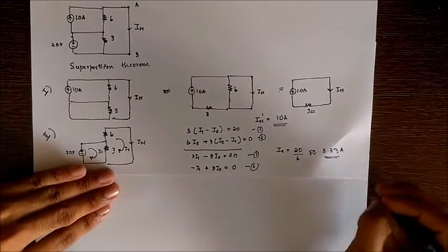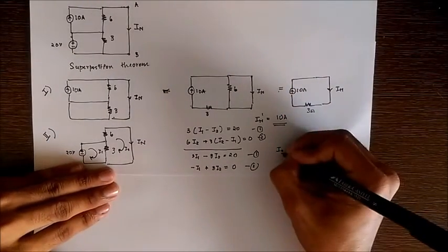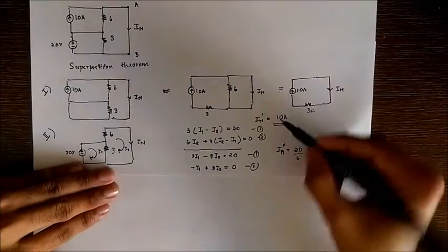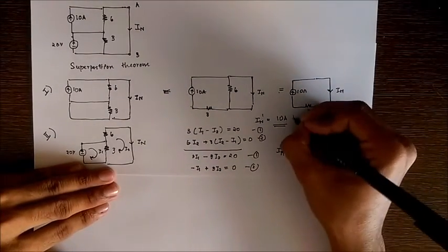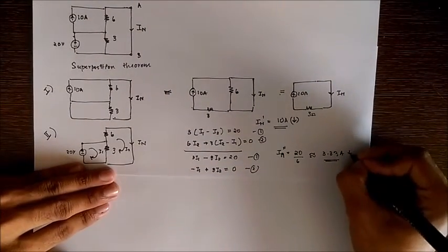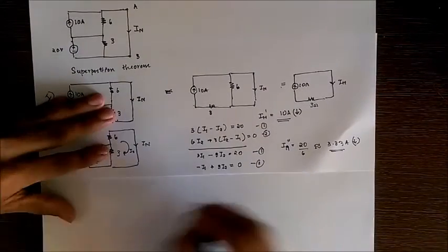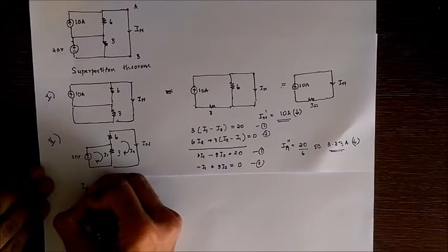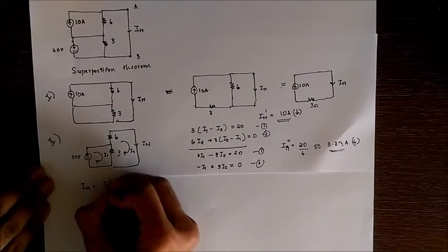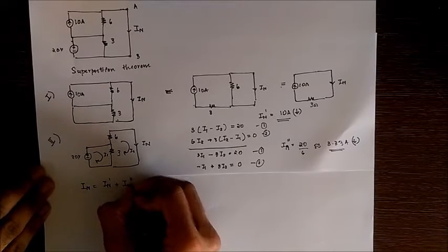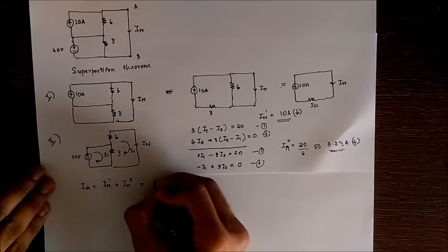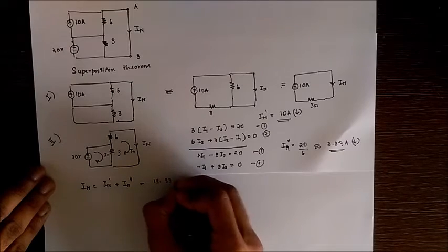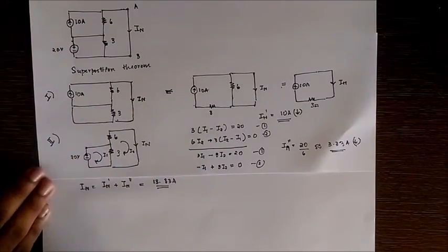So as you can see, this is In double dash by the way, both these currents are in the downward direction. So algebraically summing the currents, we get the total Norton's current as In equal to In' plus In'' which gives 13.33 Amperes. So we got the Norton current.